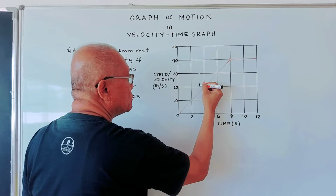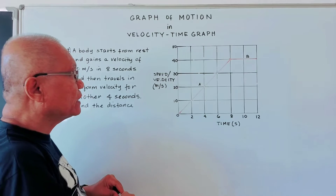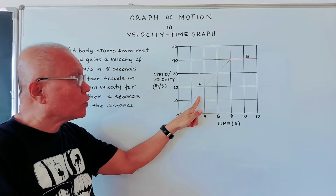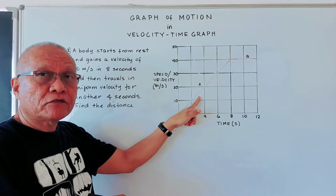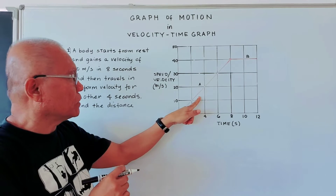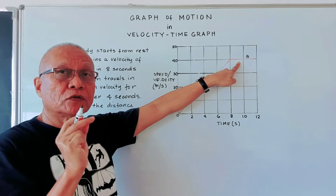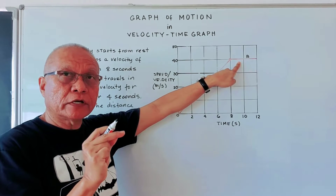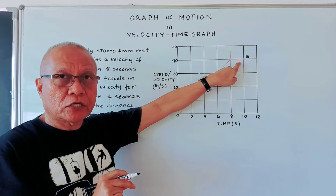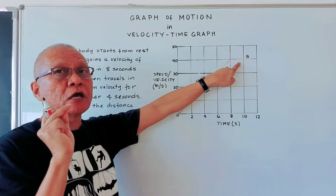Let's call the accelerating portion region A and the uniform portion region B. In region A we have a constant acceleration because we have a straight line — acceleration is not changing. In region B, because the graph is horizontal, speed or velocity is not changing. When there is no change in speed or velocity, there is no acceleration. Acceleration happens only when we have a change in speed or velocity.